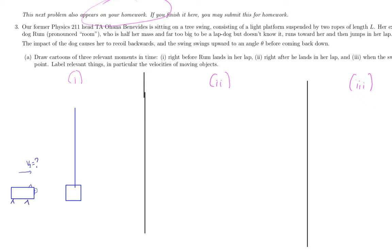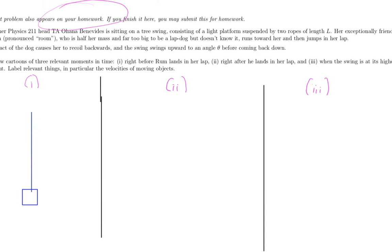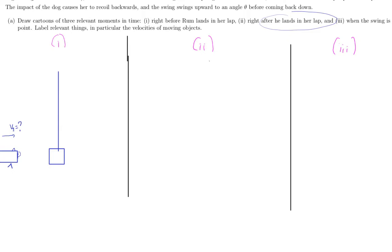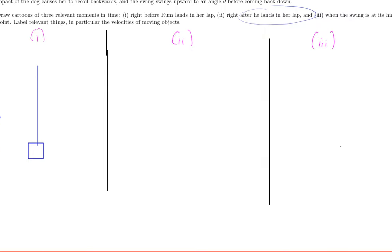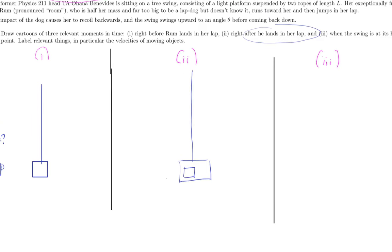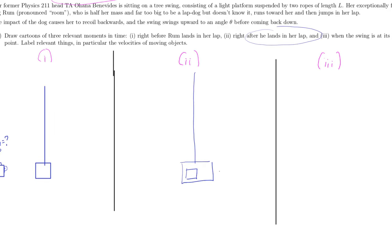In drawing number two, this is right after Room lands in her lap. So here we've got these two objects together. And they're going to be, right after he lands in her lap, moving this way at some speed v2, which we also don't know.